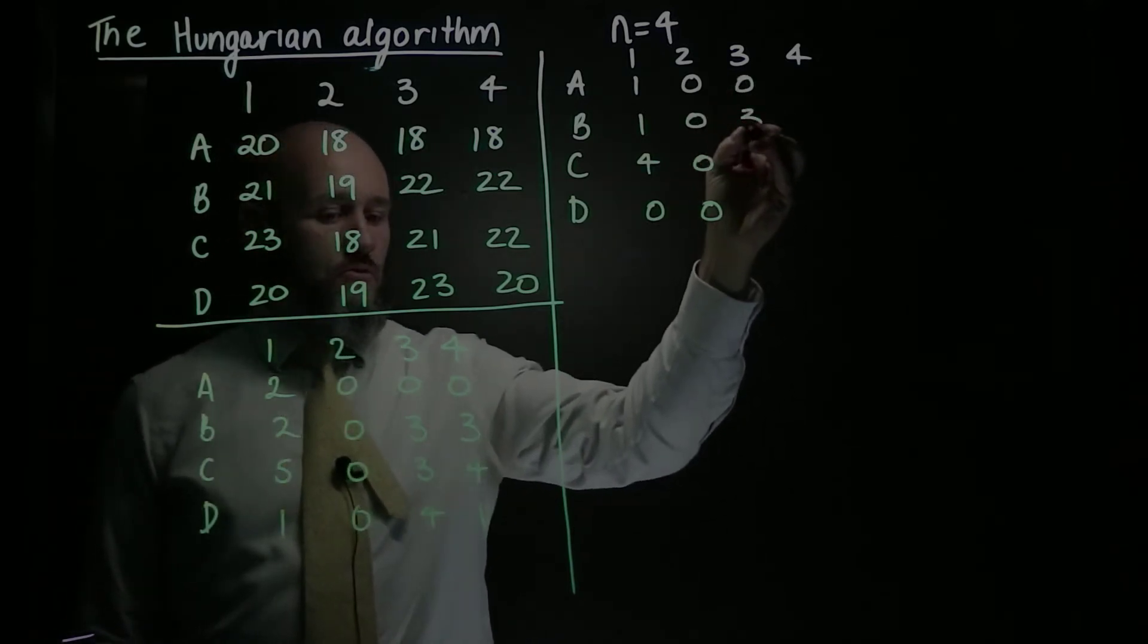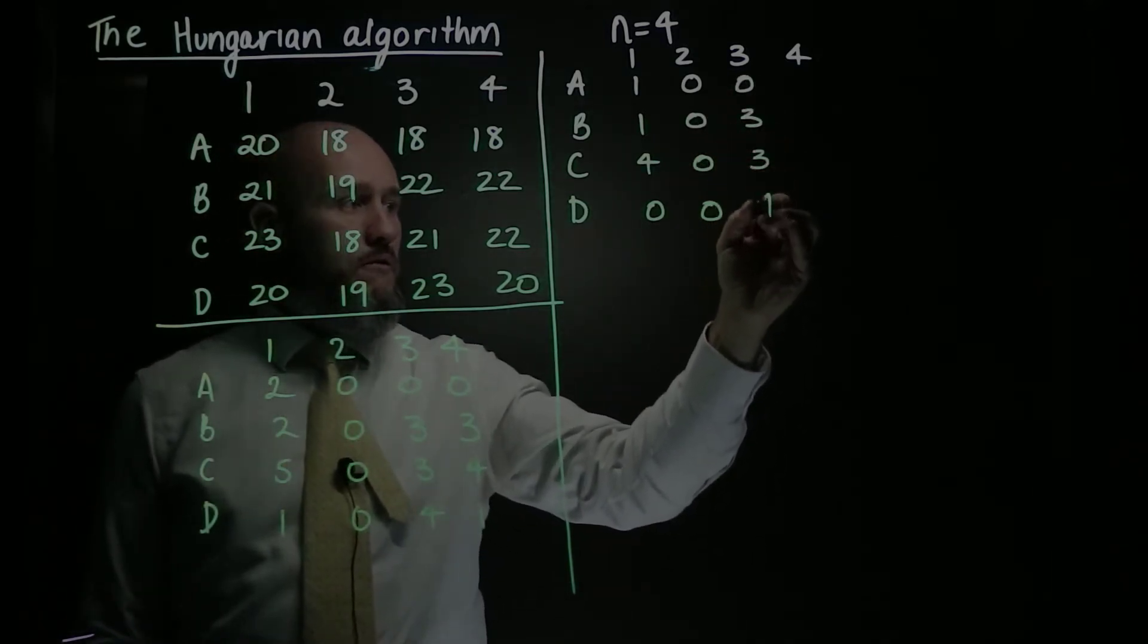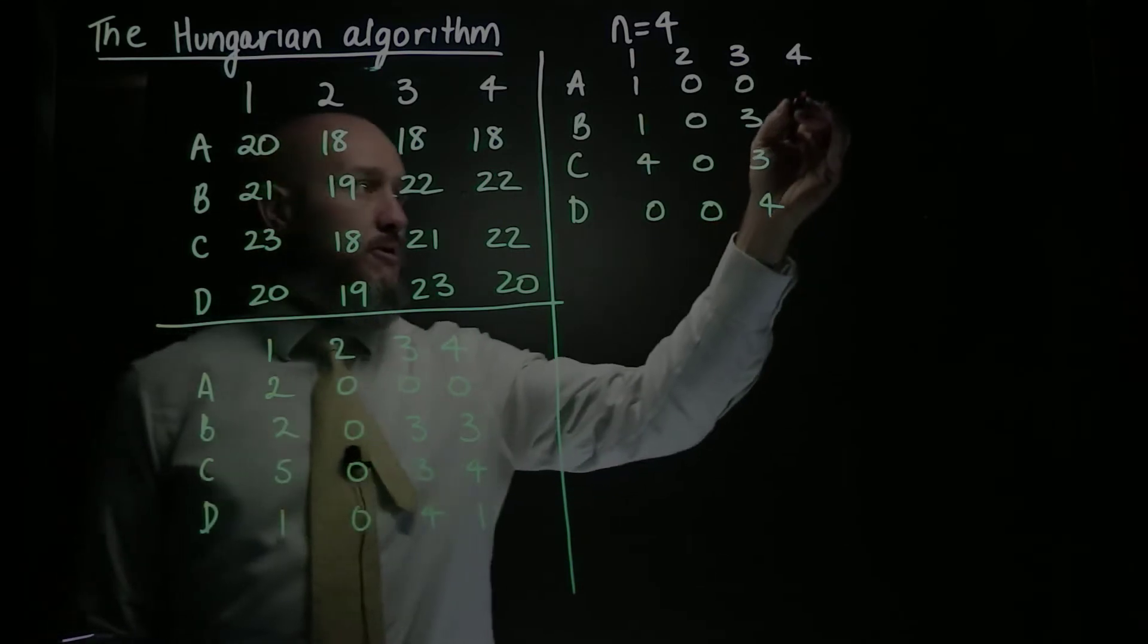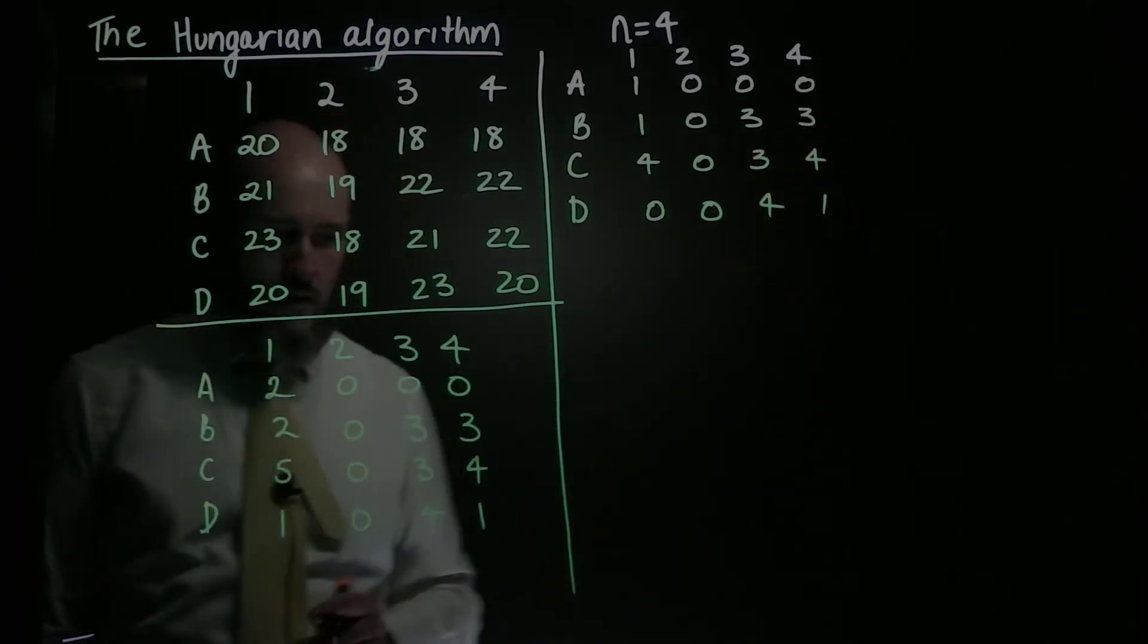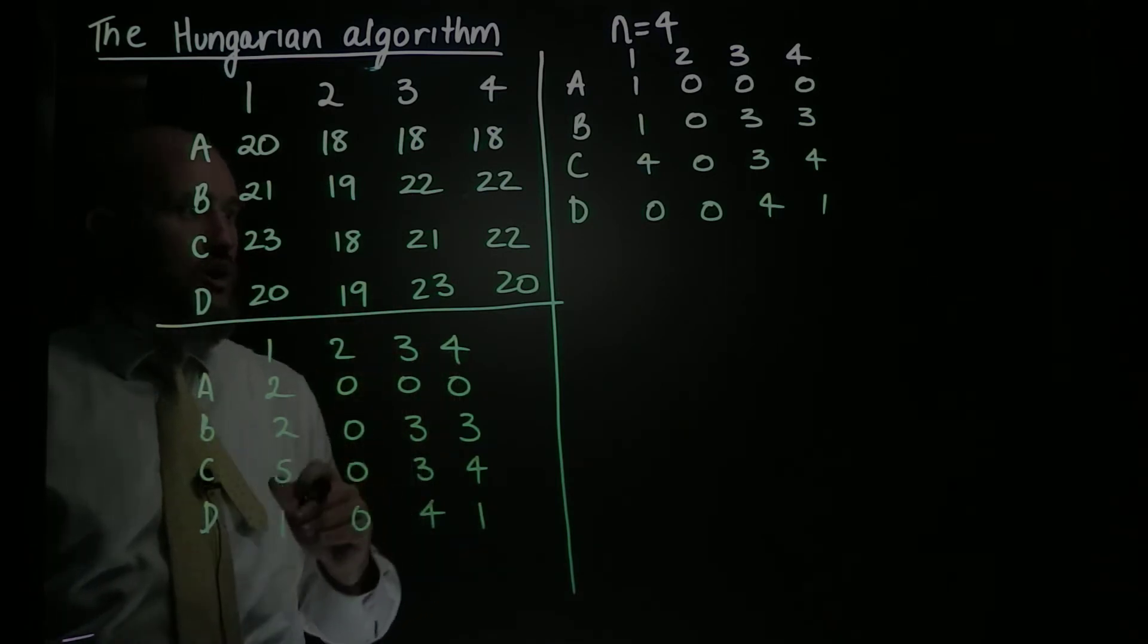Here I've got a 0, so that remains the same, 3, 3, 4, and here I've got a 0, so that remains the same, 0, 3, 4, 1. Now I've done my row reduction, column reduction.